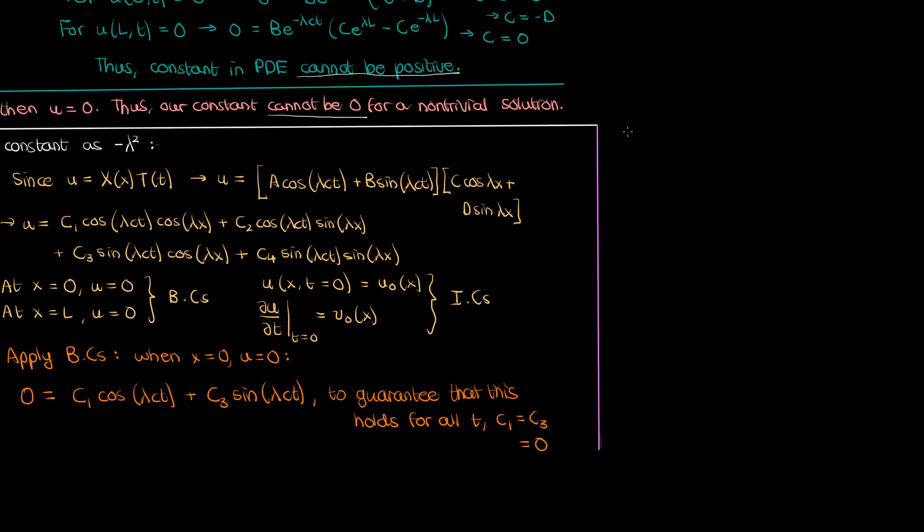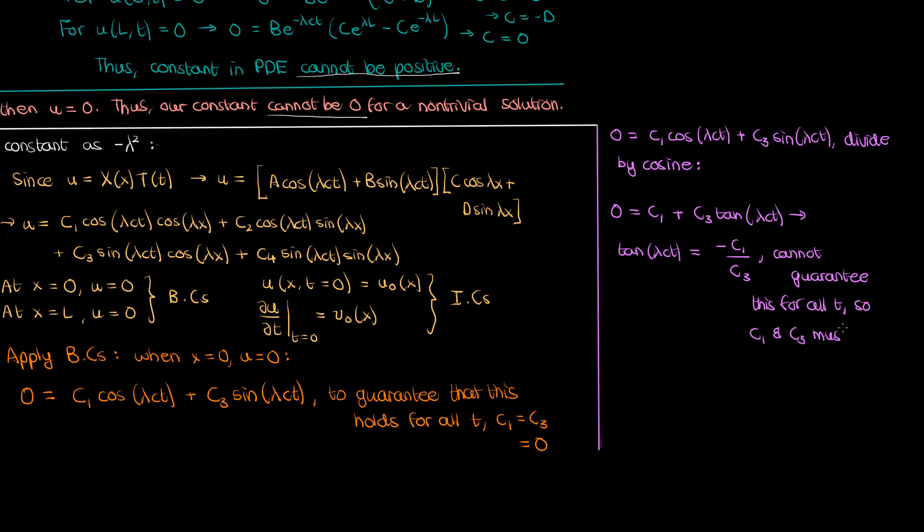Let me go on the side and illustrate why this is the case. If I copy paste this boundary condition equation here and if I suppose that c1 and c3 are non-zero then I can actually divide both sides by cosine and obtain this equation in terms of the tangent of lambda ct. After all sine over cosine is basically tangent. This means that if I isolate the tangent I get the tangent of lambda ct equals negative c1 over c3. Now the constant c1 and c3 are fixed numbers. They don't vary with time or position. However the tangent of lambda ct constantly changes with time so there's no way for me to guarantee that this tangent remains constant. No matter what value of lambda c1 or c3 I have I cannot guarantee the tangent to be fixed with time. So the only possible solution to this boundary condition is to actually have both c1 and c3 equal 0.